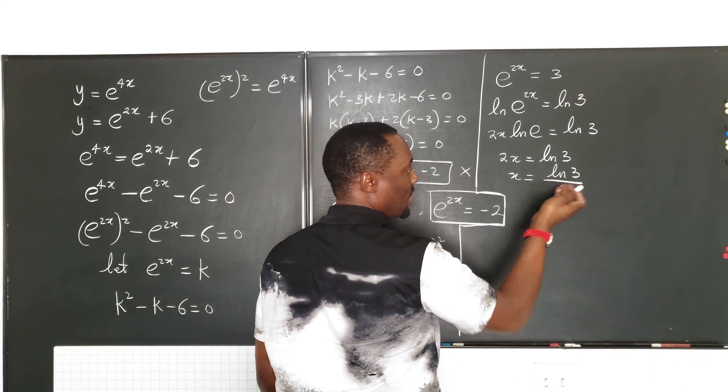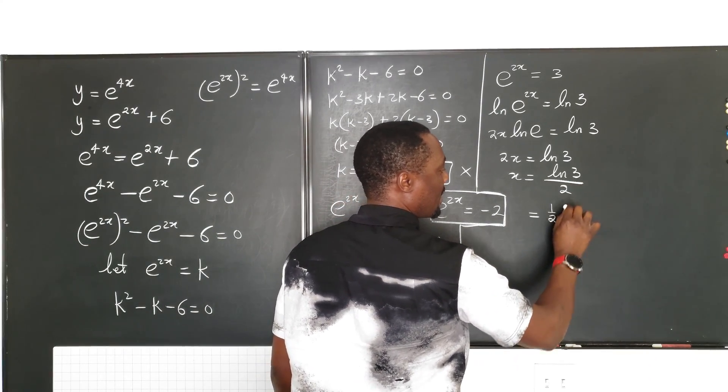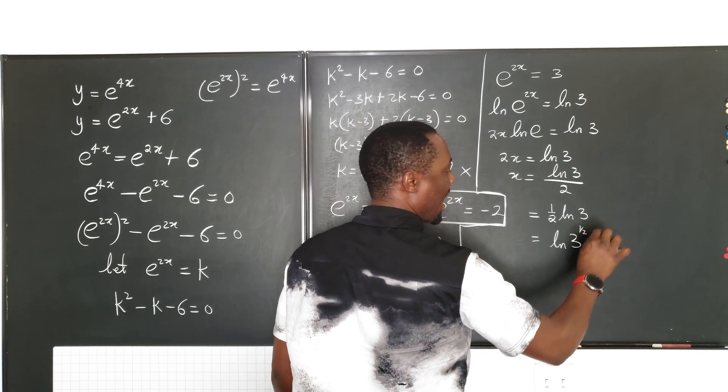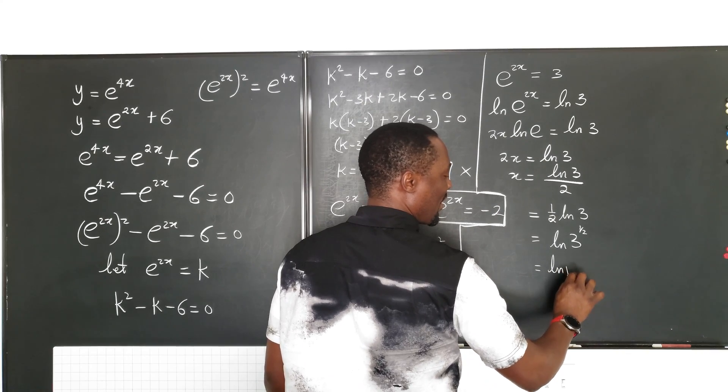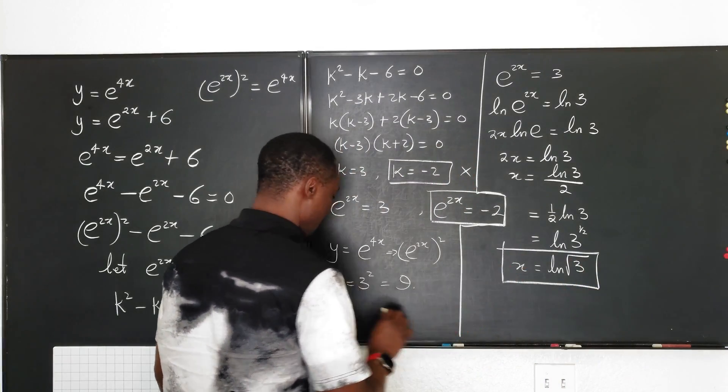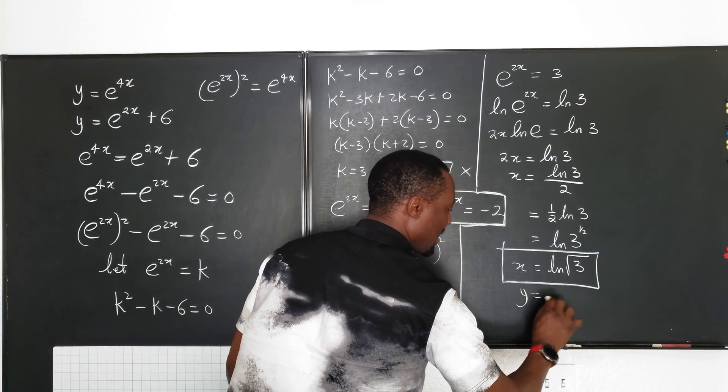So what we have, you can leave it this way, or you can say it is 1 half natural log of 3, or it's the same thing as natural log of 3 raised to the power of 1 half, or you can say it's the natural log of the square root of 3. That's x. So whatever answer you choose is correct, this is your x and y equals 9.